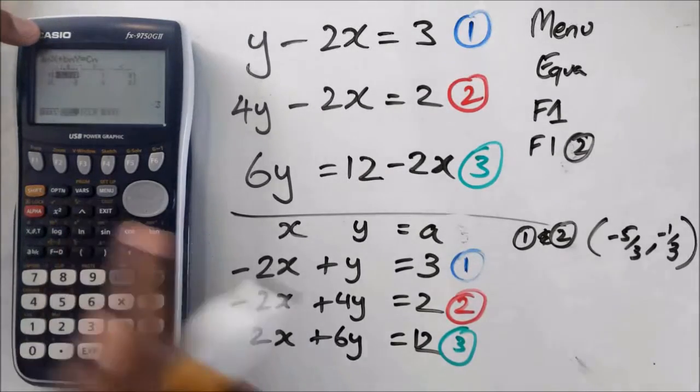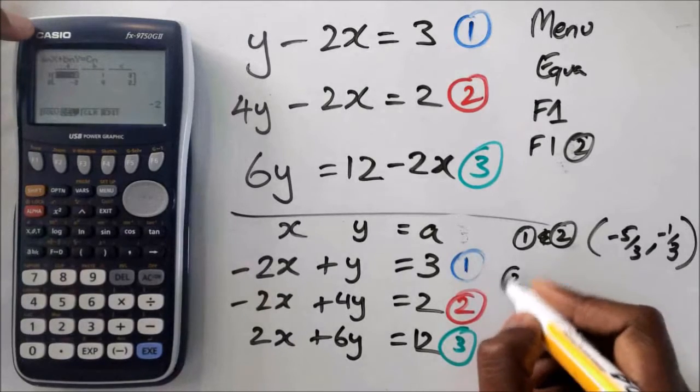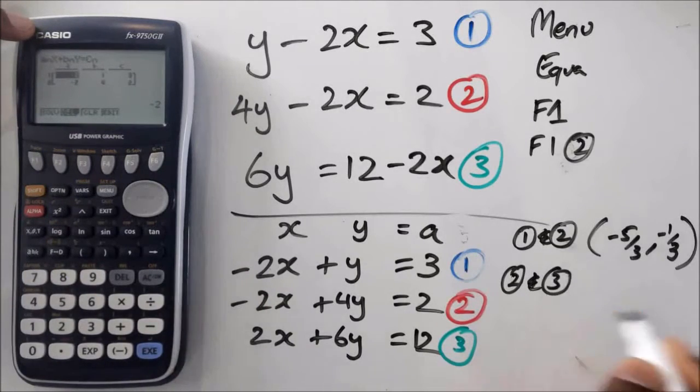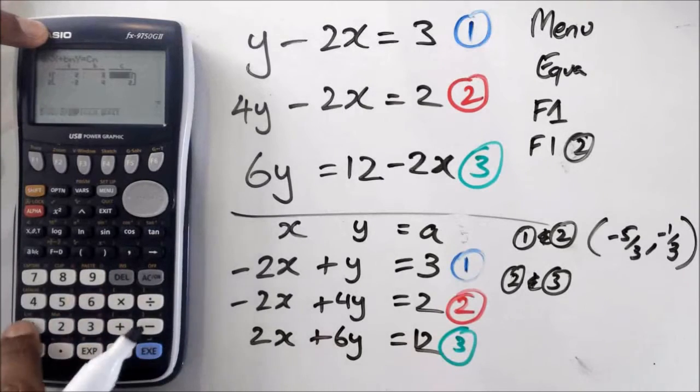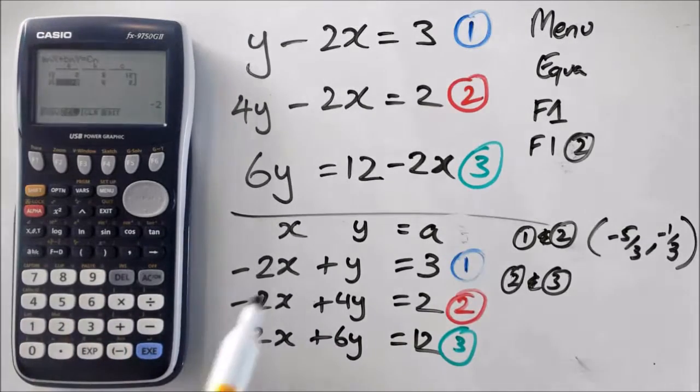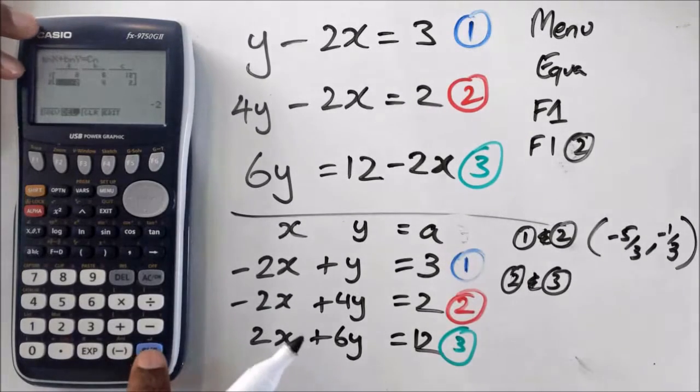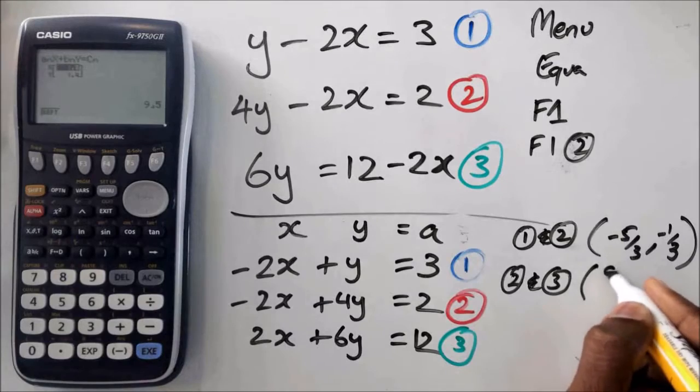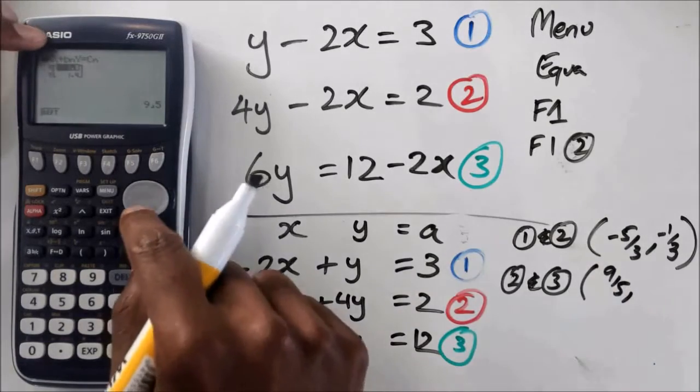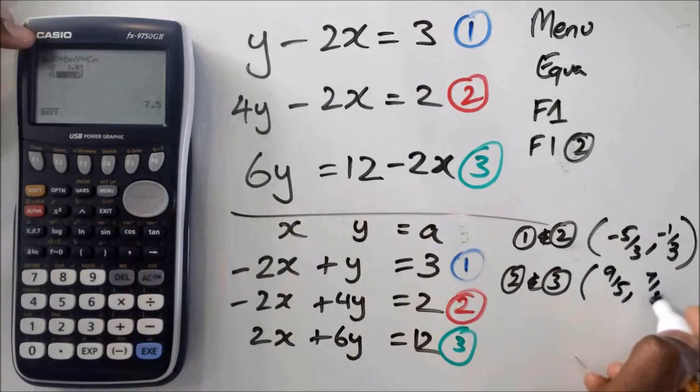So if I want to do the second one, I'm going to do equation number 2 and 3. Equation 2 and 3, I've got 2, 6, 12. But I don't need to change the second line, because that's already equation 2. So if I solve it, I actually get my second one, which is 9 over 5 and 7 over 5.